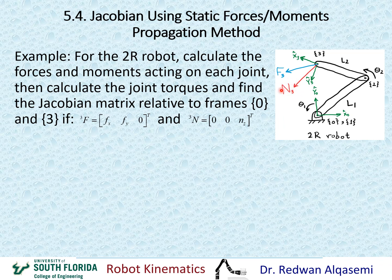These are the moments and forces acting on the end effector. For this 2R robot, calculate the forces and moments acting on each joint, then calculate the joint torques and find the Jacobian matrix relative to frames 0 and 3. The given forces on frame 3 are Fx and Fy, with Fz equal to zero because this is a planar robot — any force in the z direction won't affect the motion. For the moments, it's 0, 0, and Nz, since Nx and Ny are zeros as they won't affect planar robot motion.